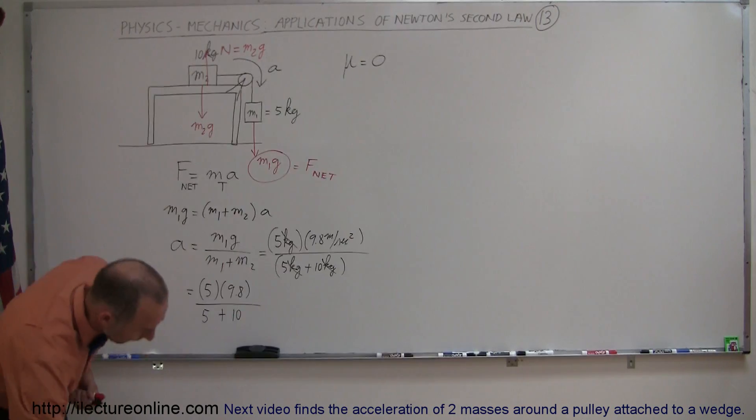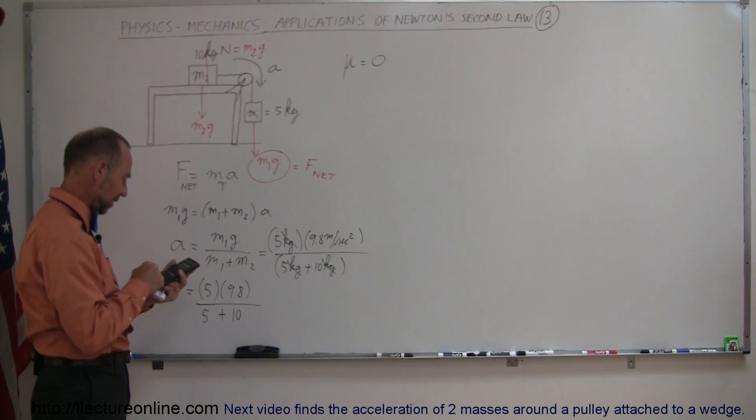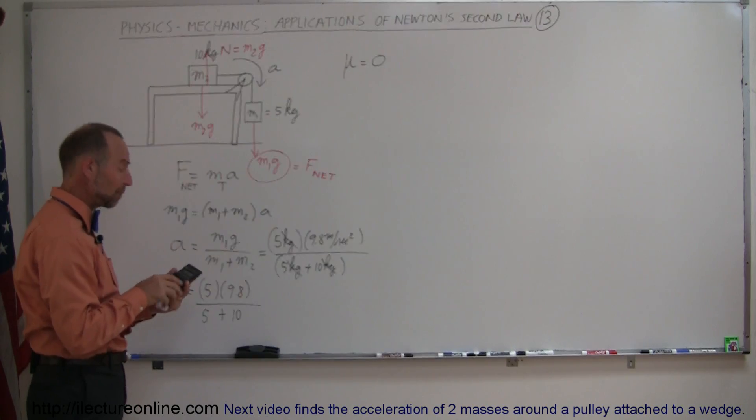Now we need a calculator, here it is, so we have 49 divided by 15, that is 3.27.